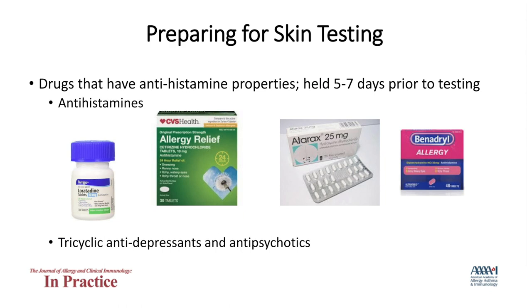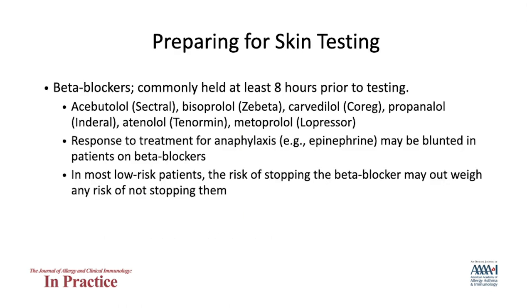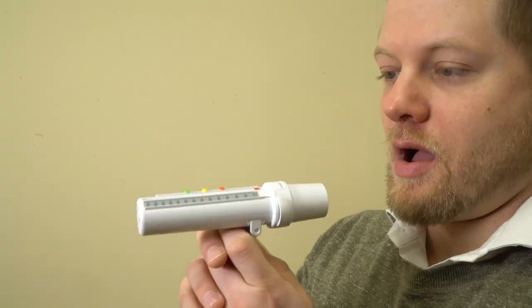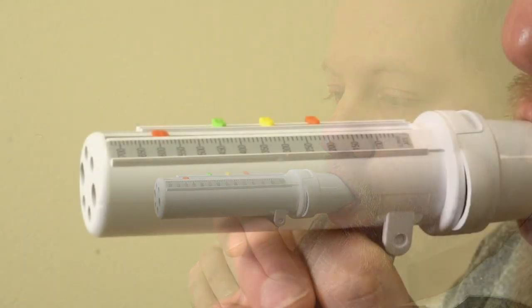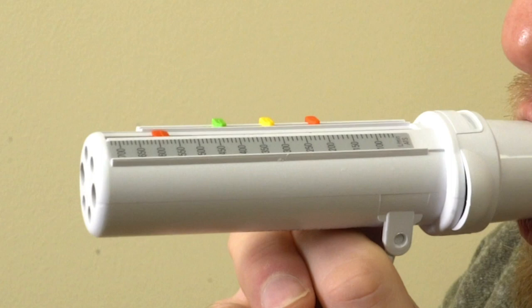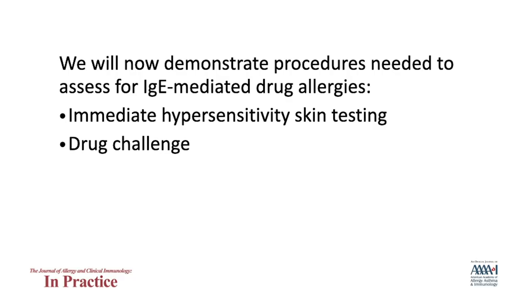The patient should continue to take beta blockers, except in the case of a history of anaphylaxis — a patient should not have taken a beta blocker in the past eight hours, because beta blockade may inhibit the action of epinephrine during anaphylaxis. Depending on the patient's comorbidities and allergy history, a baseline peak flow measurement might be indicated to allow for comparison in the event of any respiratory symptoms.